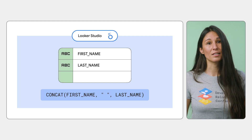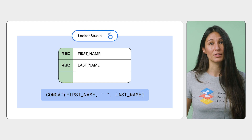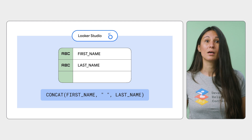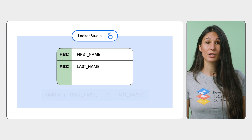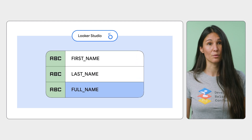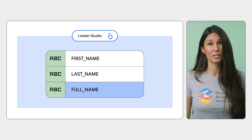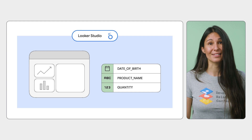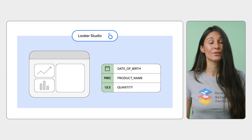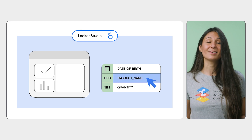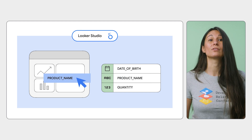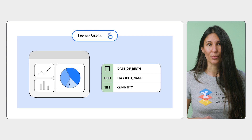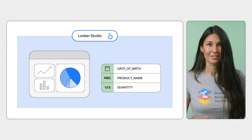For example, you could use CONCAT with first name, space, last name to combine first and last names in a new text field. Once your data source is set up, Looker Studio's drag-and-drop interface makes it easy to build visualizations and charts incorporating these new fields.